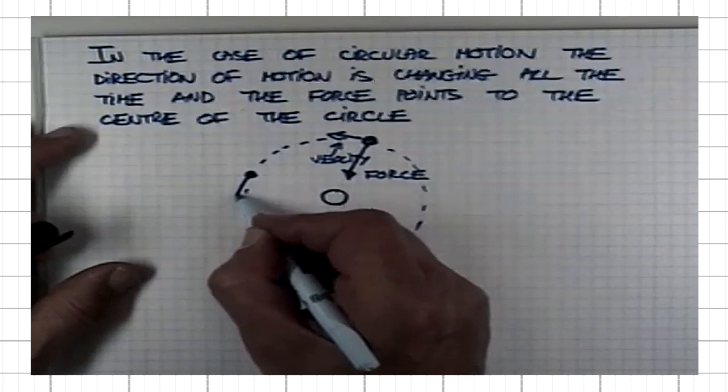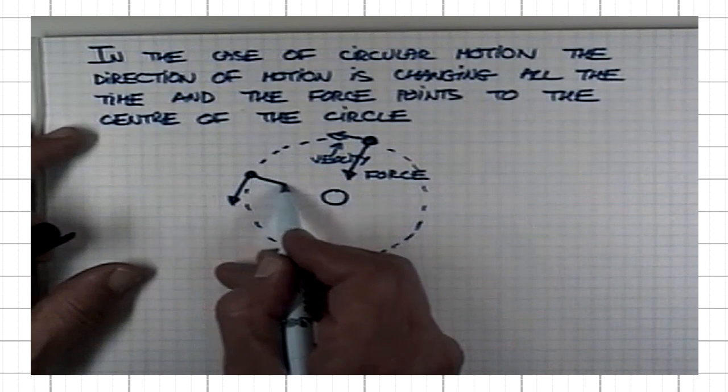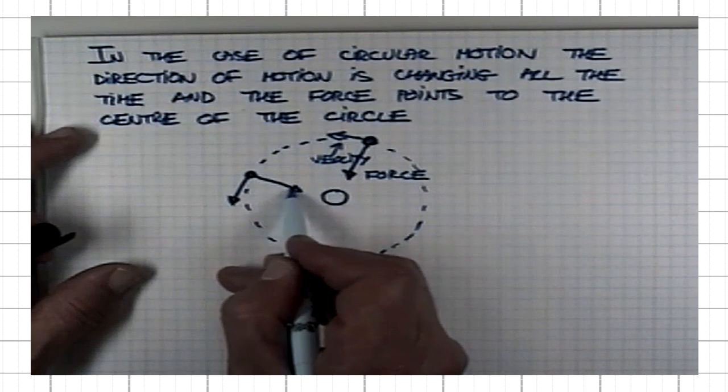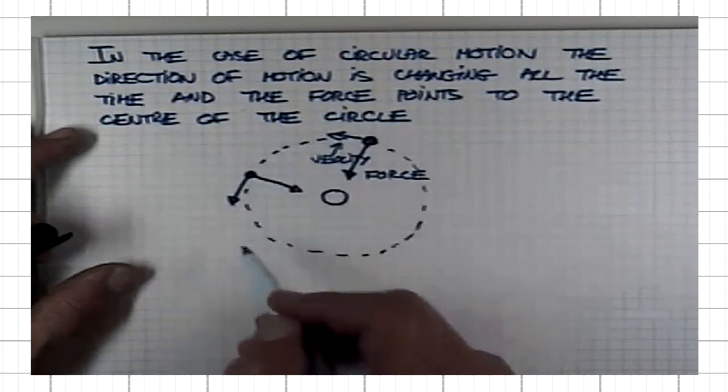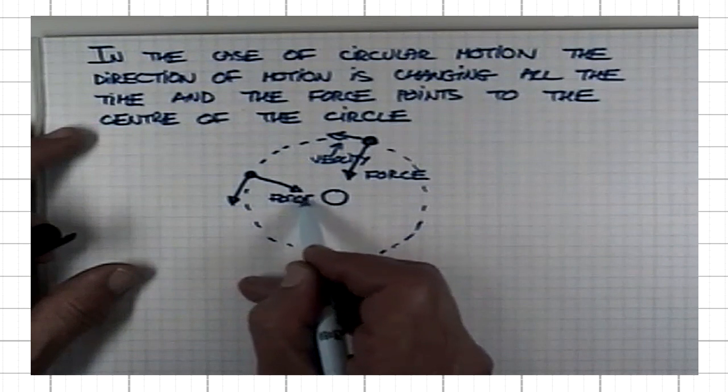The velocity is always tangential to the trajectory, and the force, in this case, because the direction of motion is changing all the time, has to point towards the center.